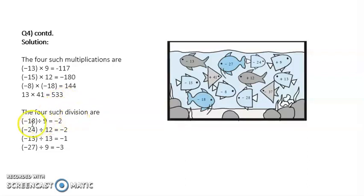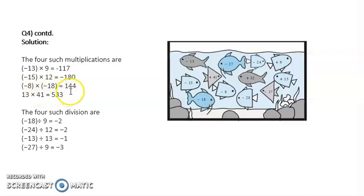Now 4 divisions: minus 18 divided by 9 gives minus 2. Minus 24 divided by 12 is minus 2. Minus 13 divided by 13 is minus 1. And minus 27 divided by 9 is minus 3. Let us recall the rules: negative multiplied by positive gives negative. Negative multiplied by negative gives positive. Positive multiplied by positive gives positive. Similarly for division: negative divided by positive gives negative. Negative divided by negative gives positive. And positive divided by positive gives positive.